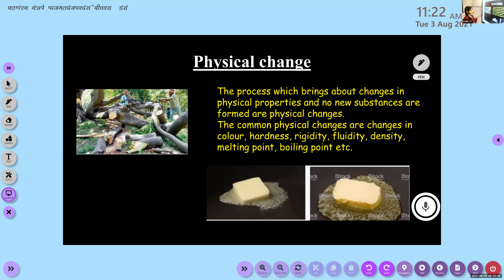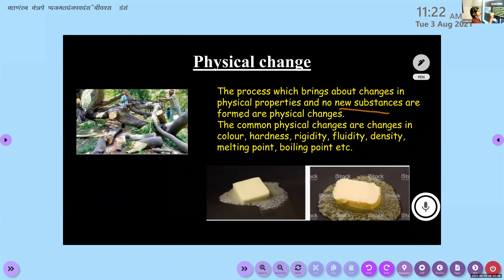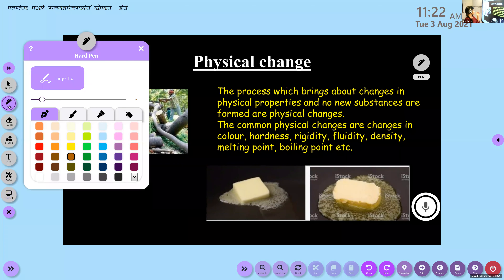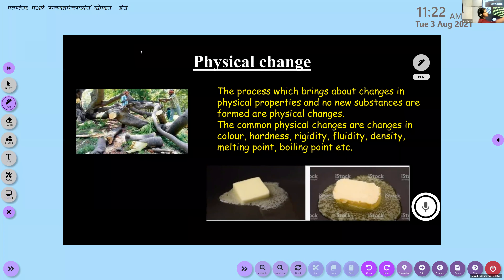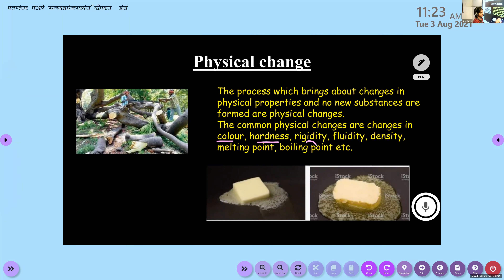Physical change: the process which brings about changes in physical properties and no new substances are formed. They are known as physical changes. Physical properties include color, hardness, rigidity, fluidity, density, melting point, boiling point, etc.